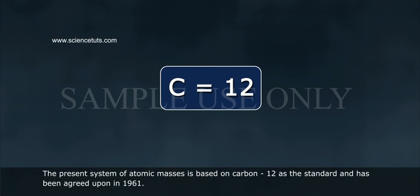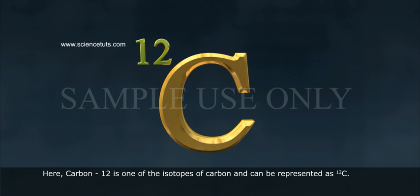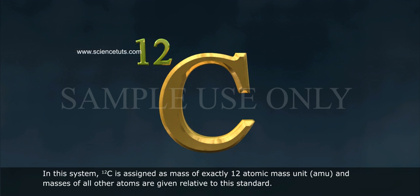The present system of atomic masses is based on carbon-12 as the standard and has been agreed upon in 1961. Here, carbon-12 is one of the isotopes of carbon and can be represented as 12C. In this system, 12C is assigned a mass of exactly 12 atomic mass units (AMU), and masses of all other atoms are given relative to this standard.